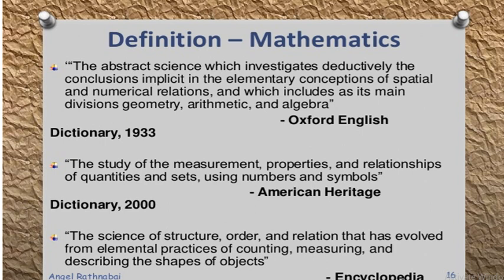Here is another definition: 'the study of the measurement, properties and relationships of quantities and sets using numbers and symbols.' This definition focuses heavily on mathematics as basically the study of measurements, properties, and relationships of different quantities and sets, using different numbers and symbols. Another definition from the encyclopedia states that mathematics is 'the science of structure, order and relation that has evolved from elemental practices of counting, measuring and describing the shapes of objects'.